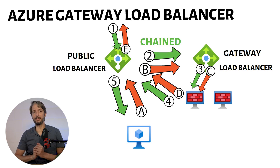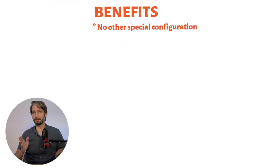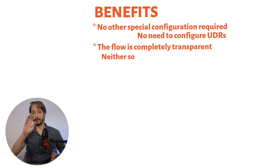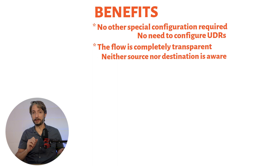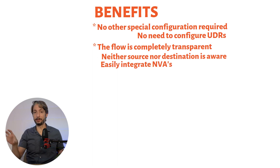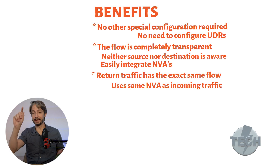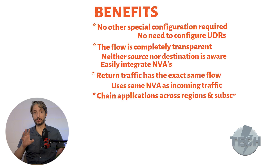Let's have a look at the benefits of this. There is no special configuration for this setup — you don't need to configure UDRs. The flow with the Gateway Load Balancer is completely transparent; the source and destination are not aware of this flow. This means you can easily integrate NVAs in your environment. The return traffic has the exact same flow and, importantly, it uses the same NVA as the incoming traffic. You can also chain applications across regions and subscriptions.